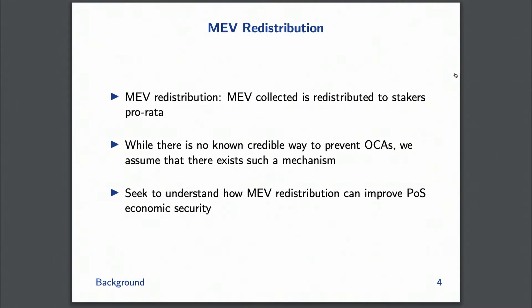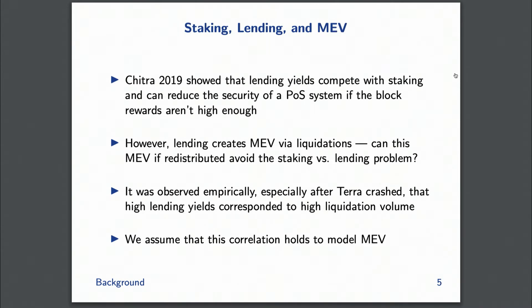The real question is to understand how MEV redistribution affects security. Security here refers to ensuring that stake is sticky in proof-of-stake — that rational agents don't move their stake from locked in the network to reallocated to DeFi. A prior paper showed a non-asymptotic phase transition between scenarios where all stake stays staked versus all stake goes to DeFi.